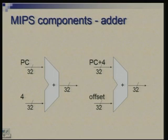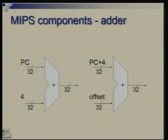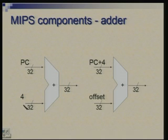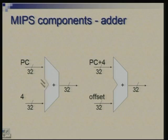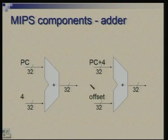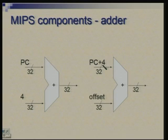We will require adders and ALUs. ALU design we have already seen — ALU will perform main arithmetic and logical operations, but we need addition in other situations also. For example, to prepare PC for the next instruction you need to add 4 to the PC contents. So this adder will perform an addition of PC and the constant 4. Similarly, we are likely to have need for adding an offset to PC plus 4 for implementing the branch instruction. For branch, if the condition is true you carry out a relative branch — the offset specified by the instruction is added to PC, but we would have already added 4 to PC by this time.